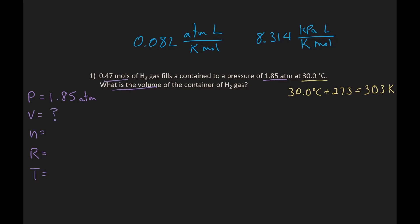We don't know what the volume is, so that's what we will solve for. The problem gives us atmospheres, and so we will use R that has atmospheres in it, and then the calculated Kelvin is 303K.